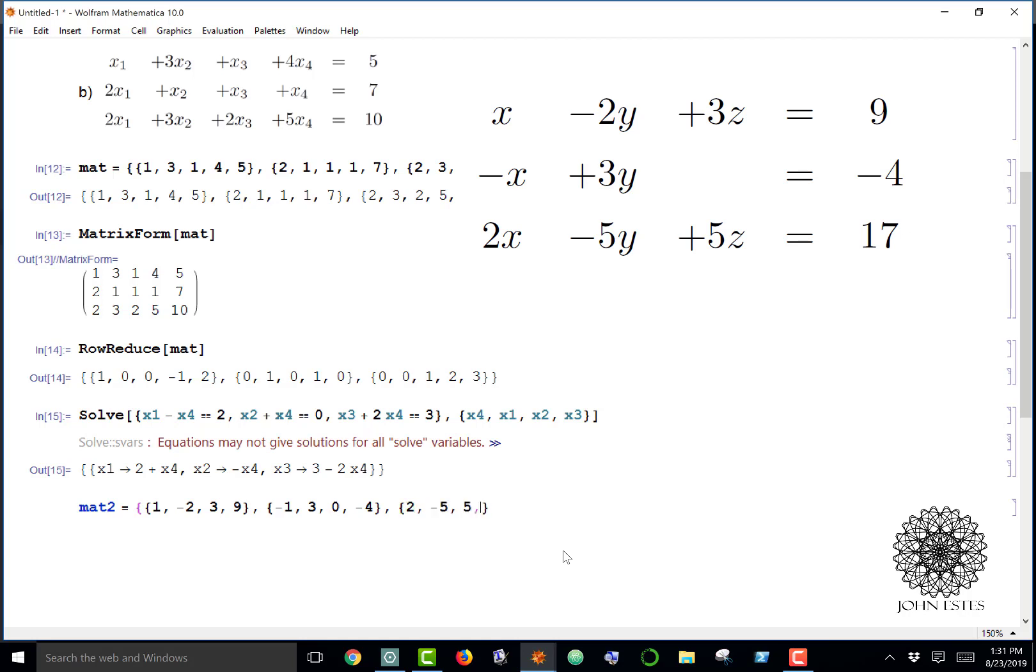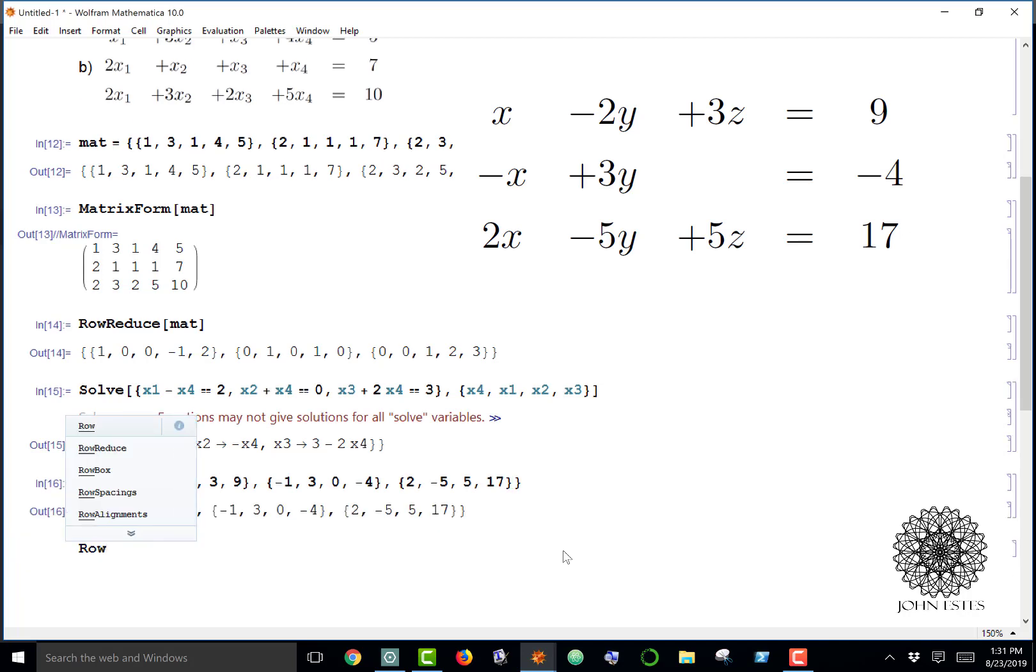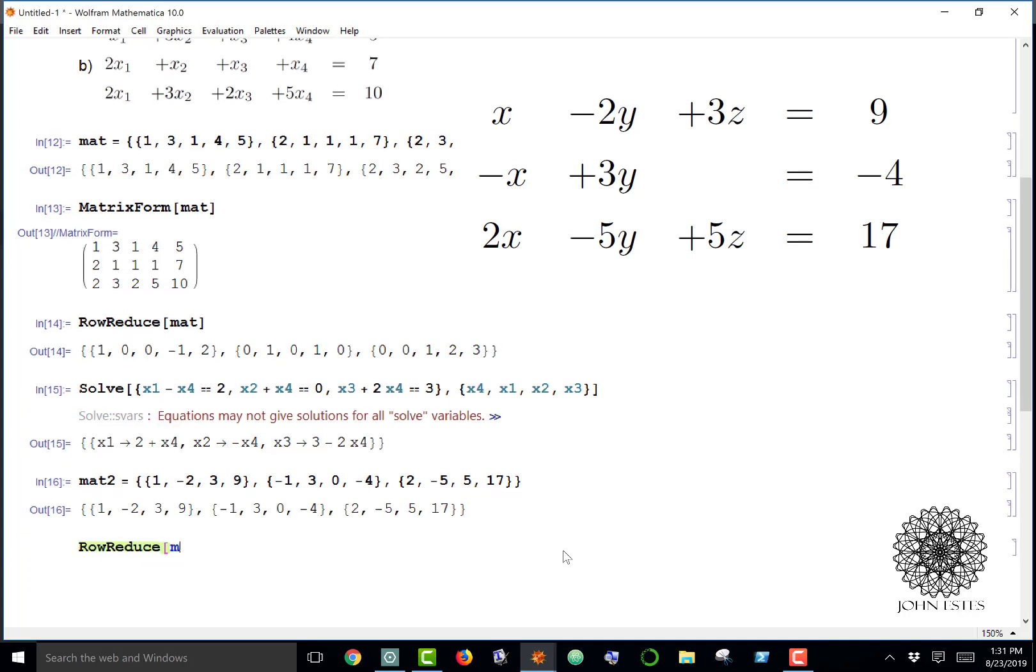Then we had -1, 3, 0, and -4, and 2, -5, 5, 17. There's my matrix. Now I can just do row reduce on that matrix, and there are my solutions. That means I have x1 is 1, or x is 1, y is -1, and z equals 2.